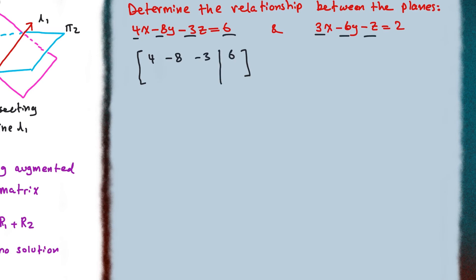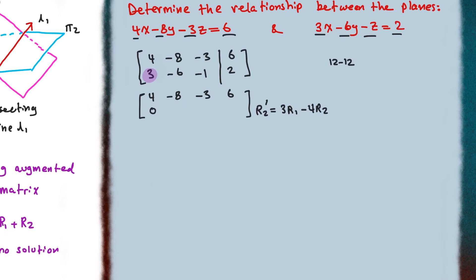For the first equation we have 4, negative 8, negative 3, 6, and for the second one: 3, negative 6, negative 1, 2. We want to change the first value of the second row to zero. The lowest common multiple is 12, so we multiply the first row by 3 and the second by 4 and subtract them. We get 12 minus 12 equals zero, negative 24 plus 24 equals zero, and negative 9 plus 4 equals negative 5. For the constant, we get 18 minus 8, which equals 10.